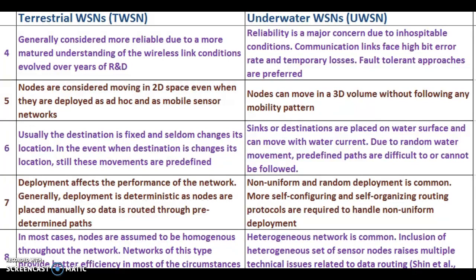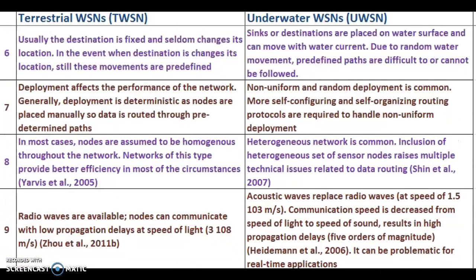Point 6: In TWSN, the destination is usually fixed and seldom changes its location. In the event when the destination changes its location, those movements are predefined. In UWSN, sinks or destinations are placed on the water surface and can move with water currents. Due to random water movement, predefined paths are difficult or cannot be followed. Point 7: In TWSN, deployment is generally deterministic as nodes are placed manually, so data is routed through predefined paths. In UWSN, non-uniform random deployment is common, and more self-configuring and self-organizing routing protocols are required.